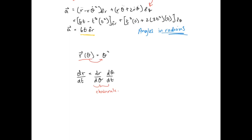For example, if r = theta², then r-dot = d/dt(theta²) = (d/dθ)(theta²)·(dθ/dt) = 2theta · theta-dot. It's very important to remember that even though the information is given as how r changes with angle, r is also changing with time, so the chain rule is essential.